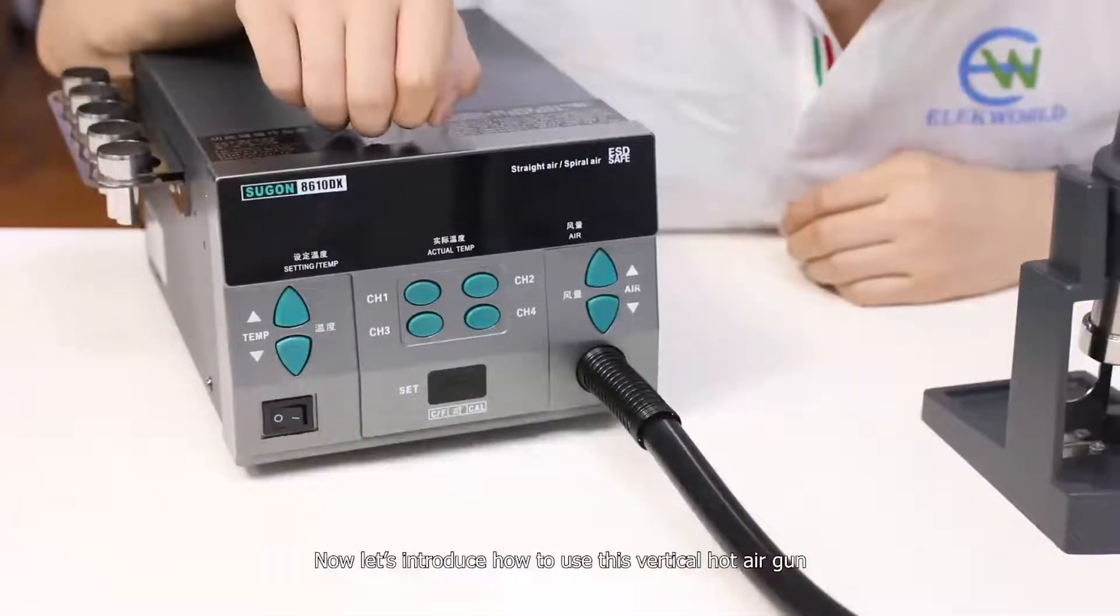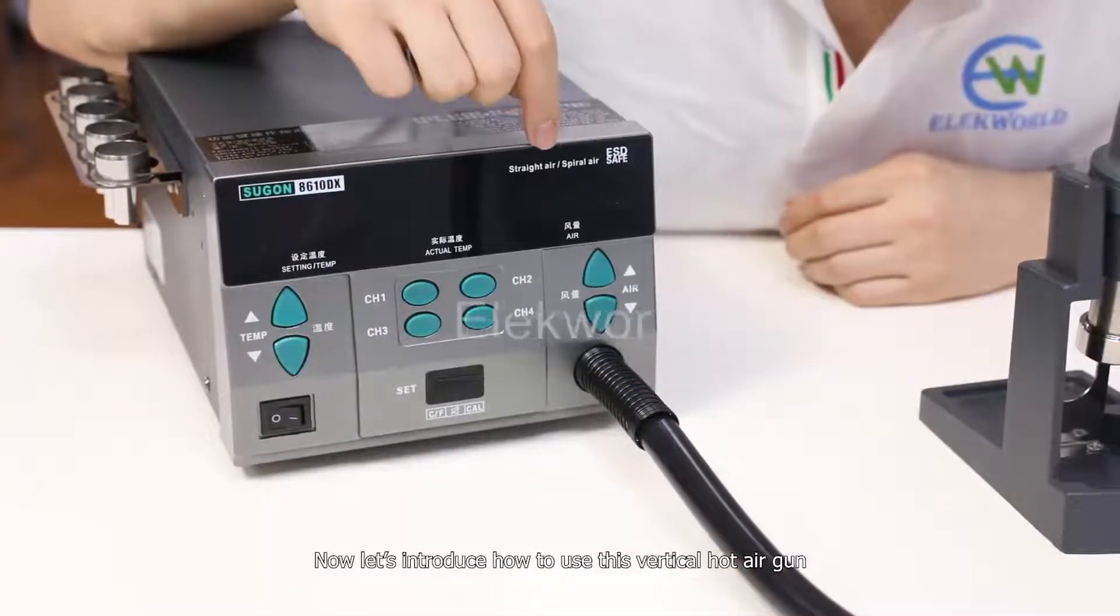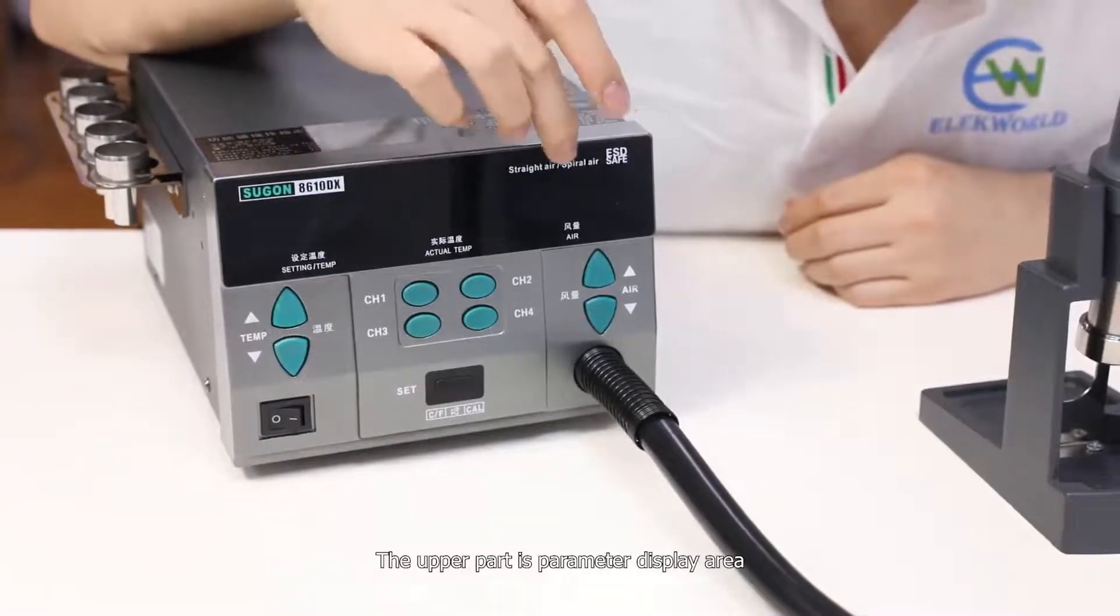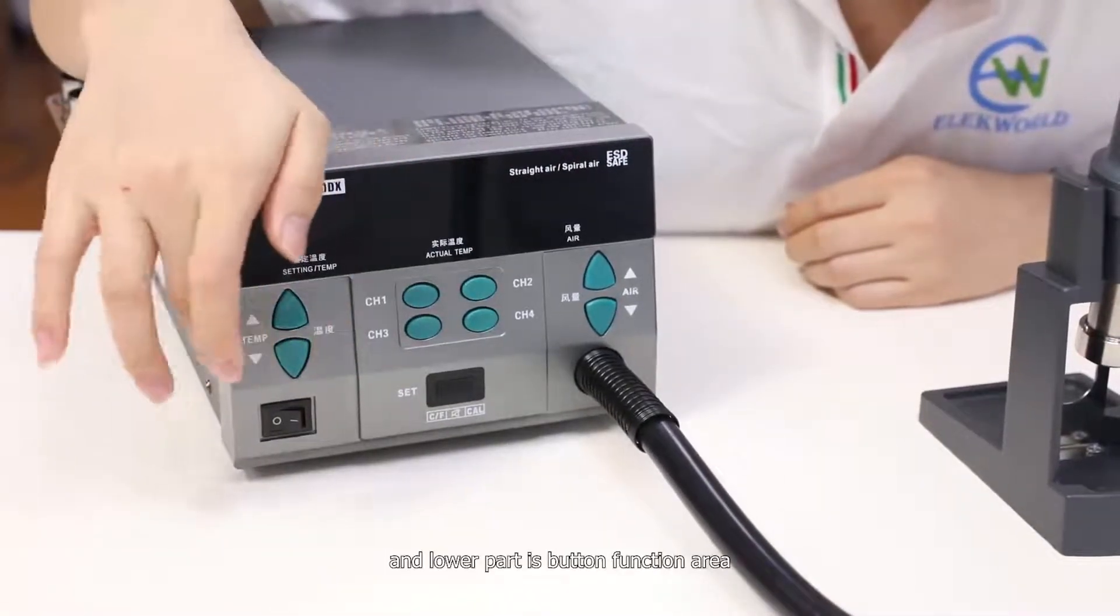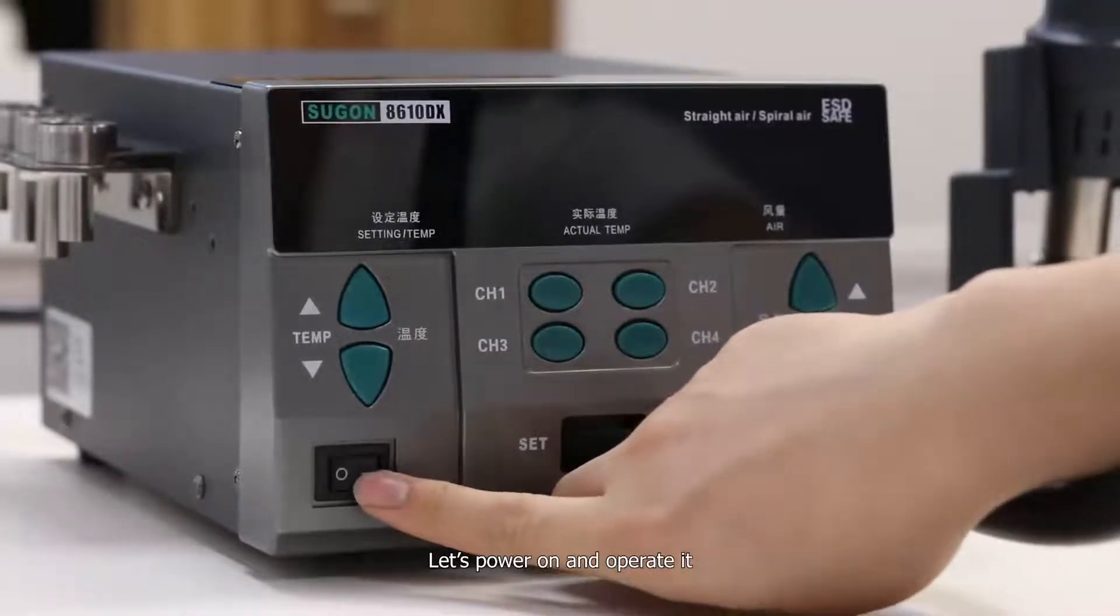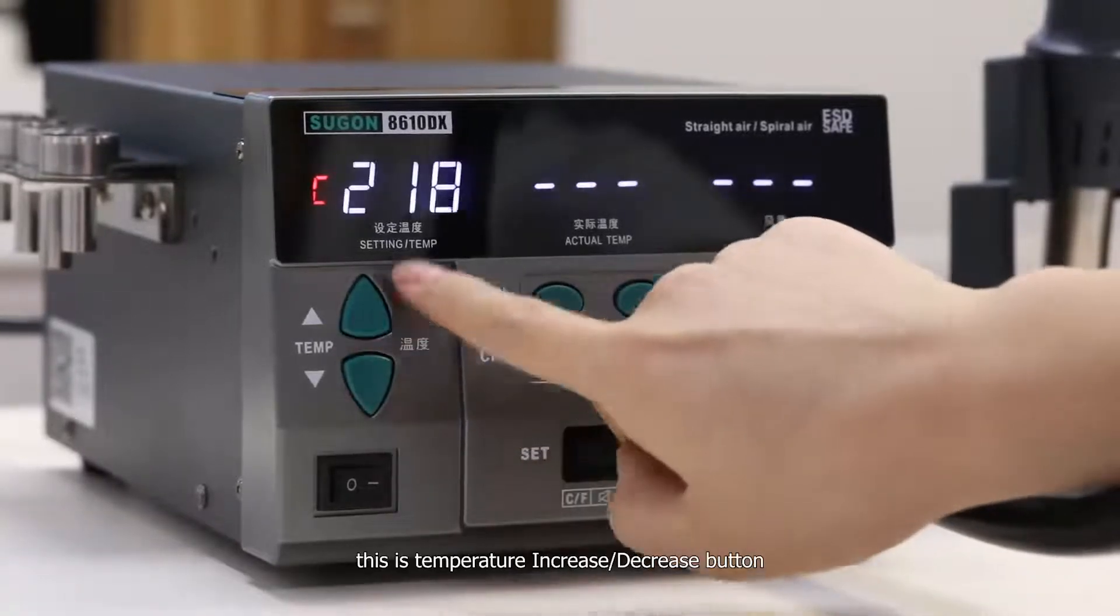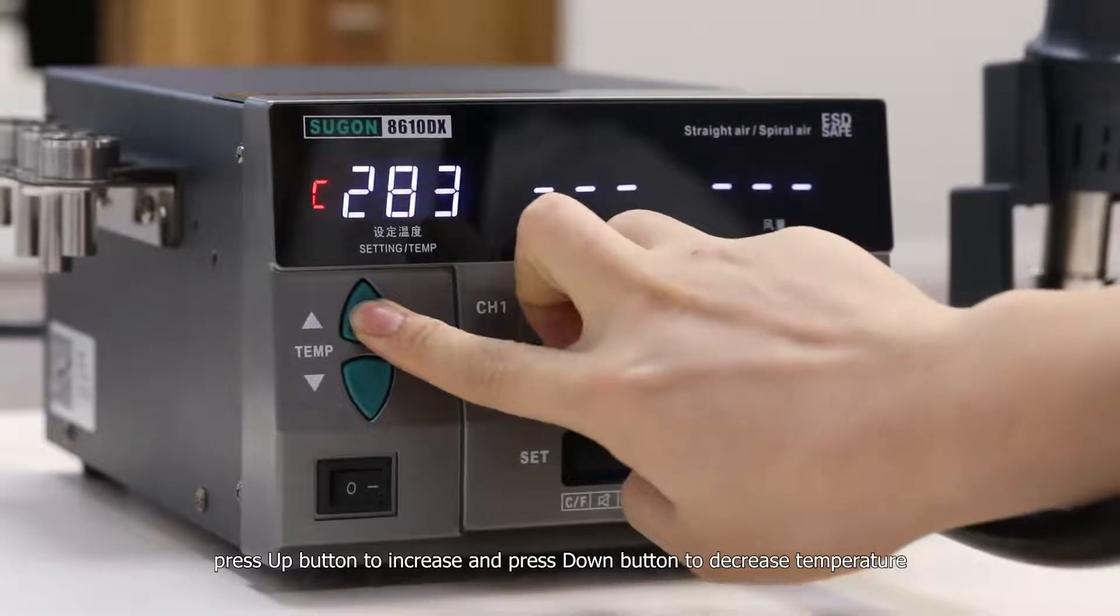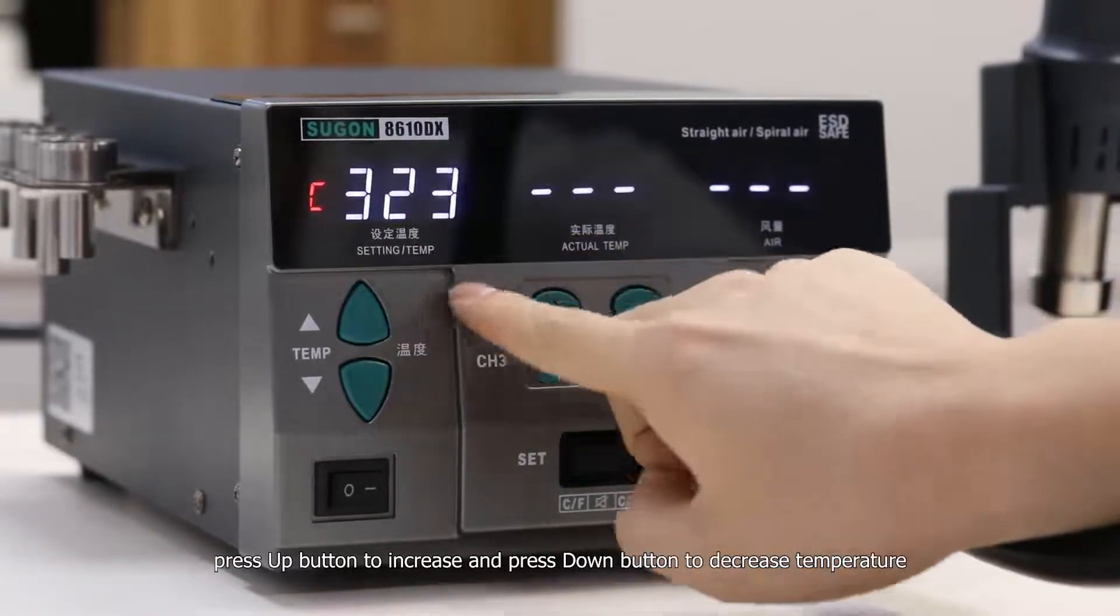Now let's introduce how to use this vertical hot air gun. The upper part is parameter display area and the lower part is button function area. Let's power on and operate it. This is temperature increase decrease button. Press the up button to increase and press down button to decrease airflow.